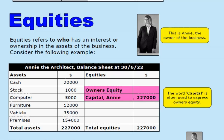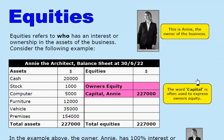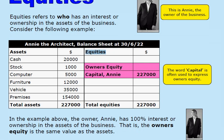The next term we want to look at is equities. Equities is a term that refers to who has an interest or ownership in the assets of the business. We've seen the assets on the left hand side of the balance sheet adding up to $227,000. On the right hand side of the balance sheet we have this term equities, and in our example here that equity is solely in the hands of the owner, Annie.